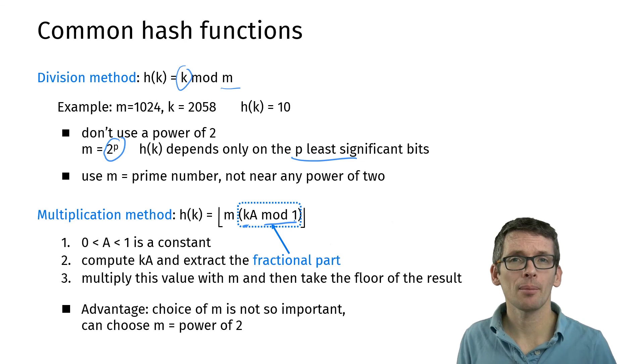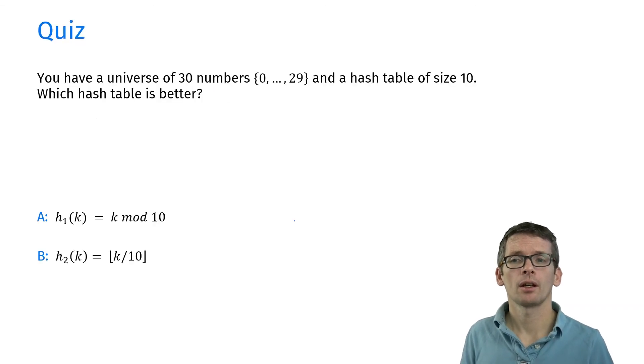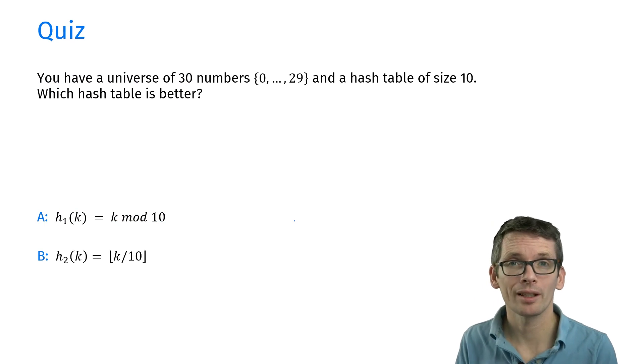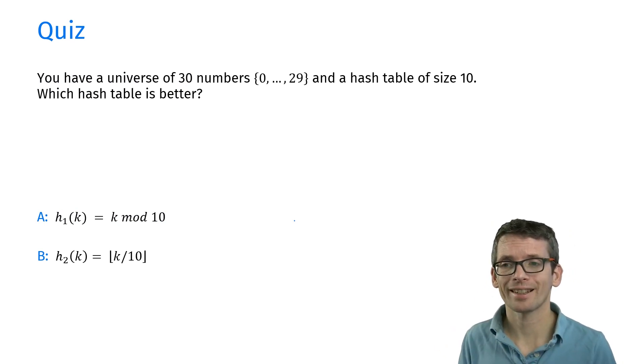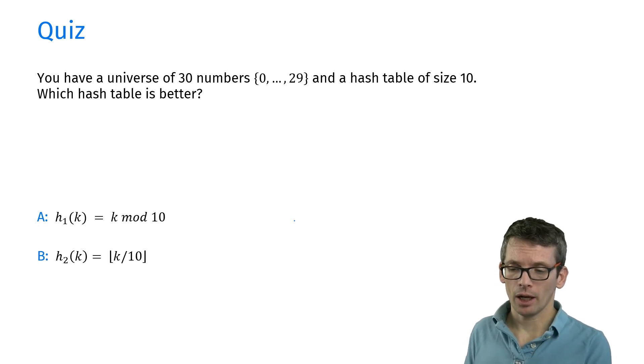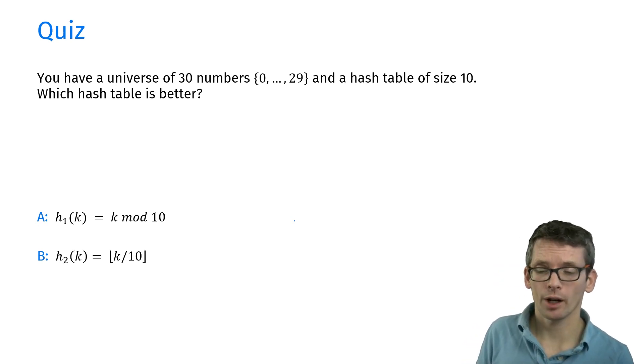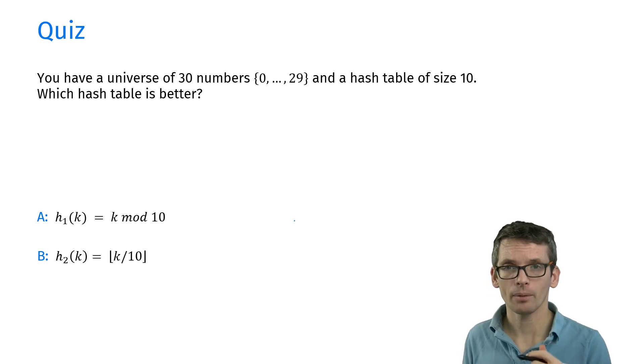So let's have a quiz about hash functions. Let's assume our universe is the numbers between 0 and 29, and we have a hash table of size 10. You have to choose between these two hash functions: h1 being k mod 10, or h2 being k divided by 10 rounded down. Which one would you pick?